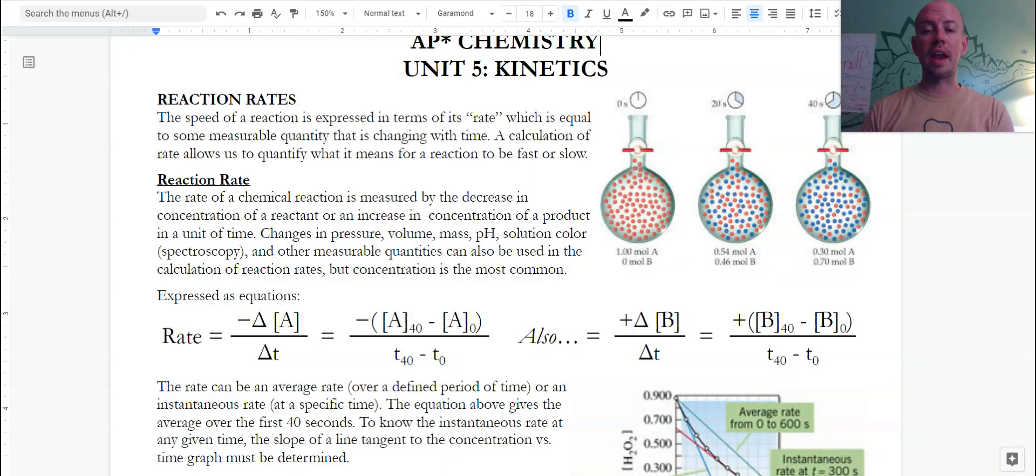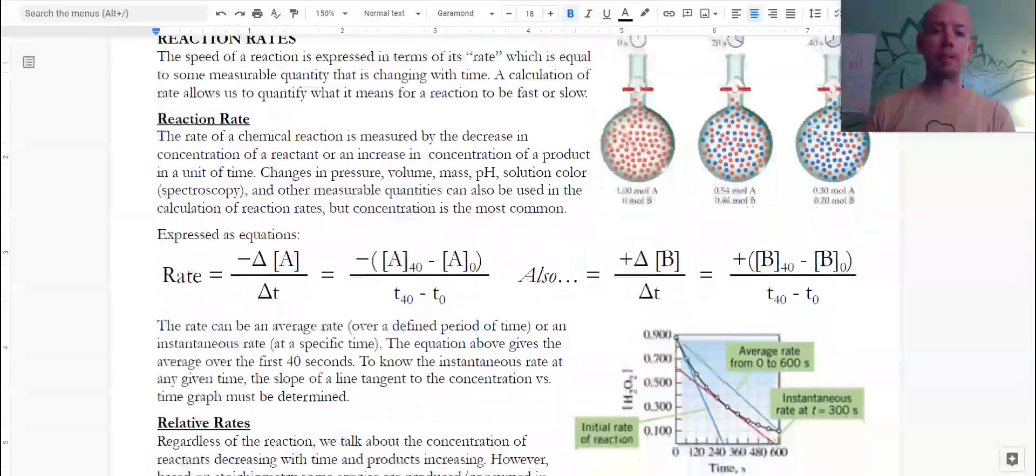And we can do the same by studying a product. As we look at these, we note that I have a negative sign on A and a positive sign on B. That's because we always will define rate as a positive number. So if we're thinking about it in terms of the amount of reactant being consumed, then we would take that negative change to make it positive for our rate. But when we're looking at it in terms of product being produced, it's already positive.